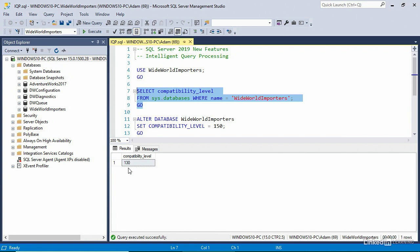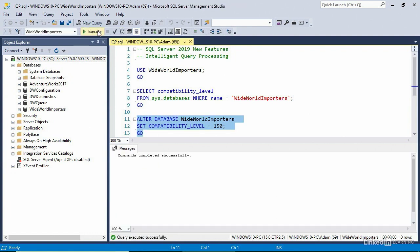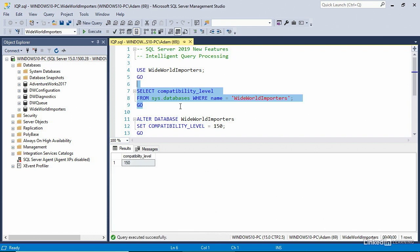The new compatibility level for SQL Server 2019 is 150, and we can set that by using an ALTER DATABASE statement. We'll alter database Wide World Importers and set compatibility level equal to 150. When I execute it, I see that the command completed successfully, and now I can see that the new compatibility level for Wide World Importers is 150. And that's all you need to do to take advantage of the new Intelligent Query Processing features of SQL Server 2019.